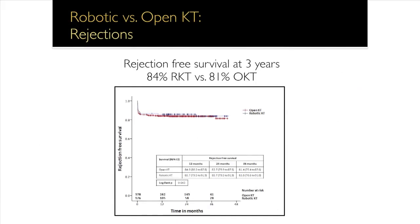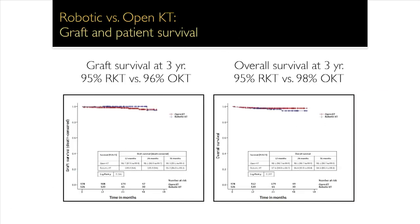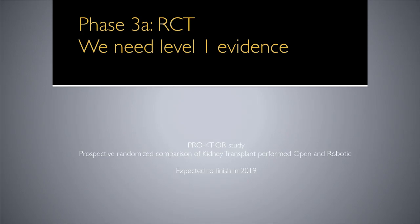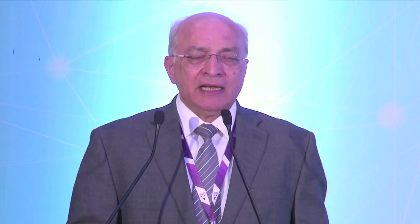Rejection-free survival at three years was 84% versus 81%, and graft survival and overall survival in both groups were greater than 95%. To obtain Level 1 evidence beyond this non-randomized comparison, we have planned the PROCTOR study — a prospective randomized comparison of kidney transplants performed open versus robotically. Recruitment has already started. This is a multi-centric study and anyone wishing to join can obtain IRB approval at their institution. The study is expected to conclude by end of next year.